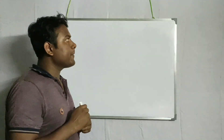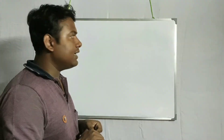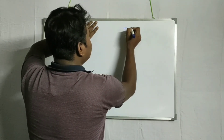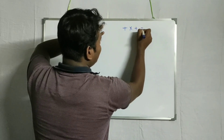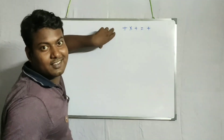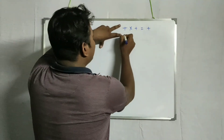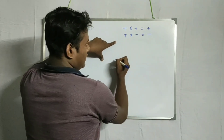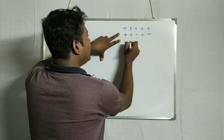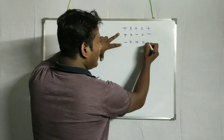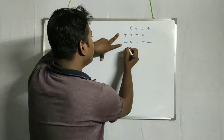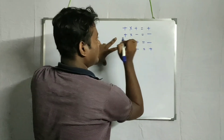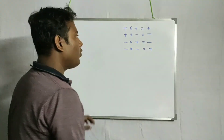Why? I am going to learn about this. Positive into positive equals positive. Positive into negative equals negative. Negative into positive equals negative. So what is negative into negative? Positive. A new value is the same.